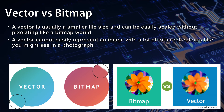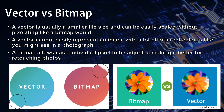A vector cannot easily represent an image with a lot of different colours like you might see in a photograph. This is why we use bitmaps for these. A bitmap allows each individual pixel to be adjusted, making it better for retouching photos. Meanwhile, the scalability of vector images makes them perfect for things like company logos that might be used on something as small as a business card and as large as a billboard.